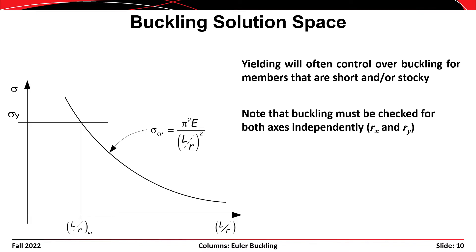There's another limit on column strength. Looking at the solution space again with L/r as the independent parameter and stress as the dependent parameter, we have our critical stress π²E/(L/r)², but we also recognize that there is an upper limit: the yield stress of the steel. This gives us two different limits, and there is a critical slenderness ratio (L/r)_critical representing the transition from yielding governing for short stocky columns to elastic Euler buckling governing for longer slender columns.